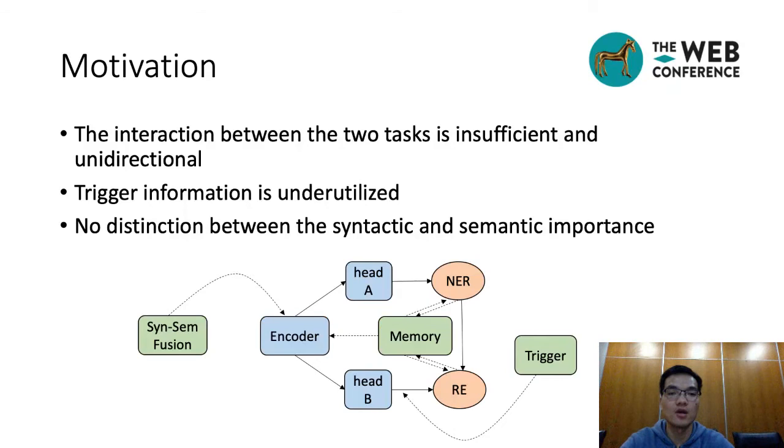We construct a memory module between the NER and RE tasks, and it stores the representations of entity categories and relation categories. By interaction with the memory, we connect the entity recognition and relation extraction tasks. We introduce a trigger word sensor on the relation extraction task based on the attention mechanism, which aggregates relation-trigger words and facilitates relation classification. On the encoder, we construct semantic and syntactic graphs and dynamically fuse them.